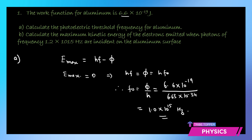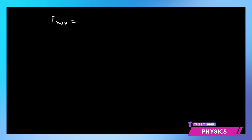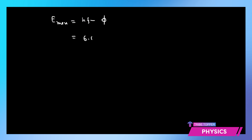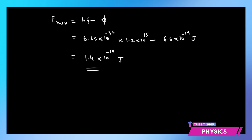Now, calculate the maximum kinetic energy of the electrons emitted when photons of frequency 1.2 times 10 to the power 15 Hertz are incident on the aluminum surface. Using Emax equals Hf minus phi: H times 1.2 times 10 to the power 15, minus the work function, gives us 1.4 times 10 to the power negative 19 joules. This is the kinetic energy of the emitted electrons.